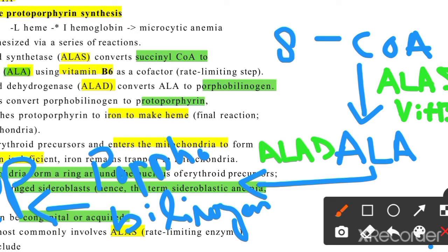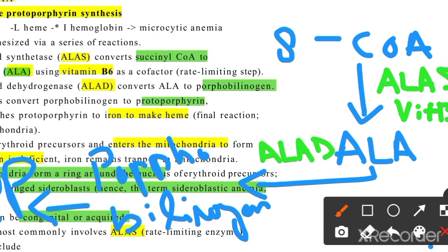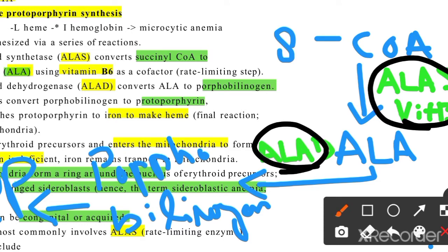With the help of porphobilinogen and vitamin B6, through a series of steps, protoporphyrin is synthesized. So ultimately, if protoporphyrin is not made through this pathway, hemoglobin will not be made either. This is the basic story of sideroblastic anemia.